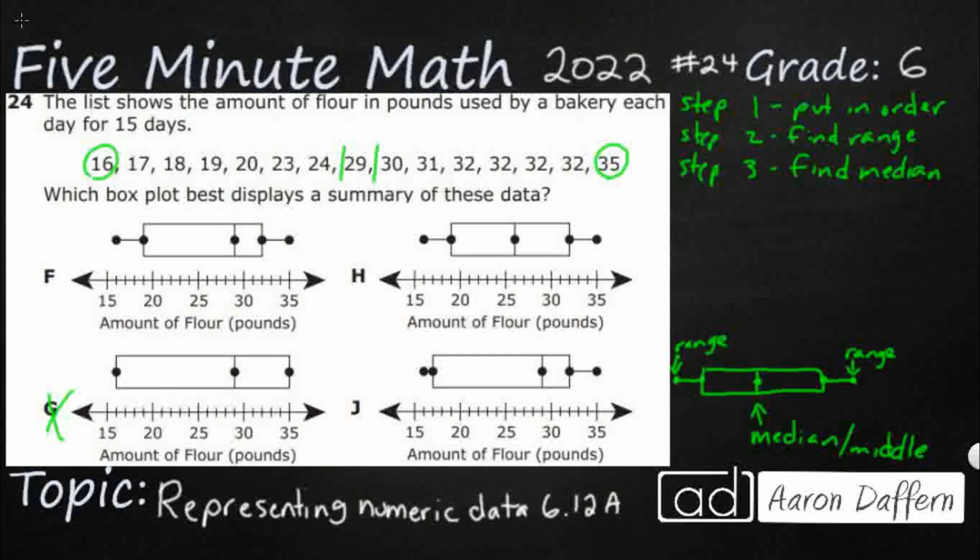So we're looking good on F. We were looking good on G, but the range is gone. Oh, look. We've got a problem there with H. That says the middle number is 26. And we are good on J. So we've gotten rid of H and J.